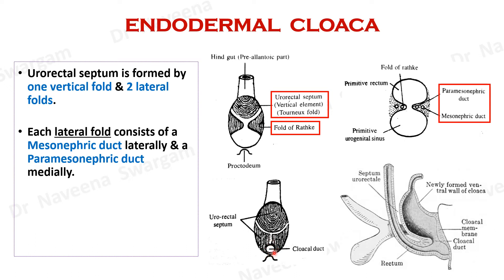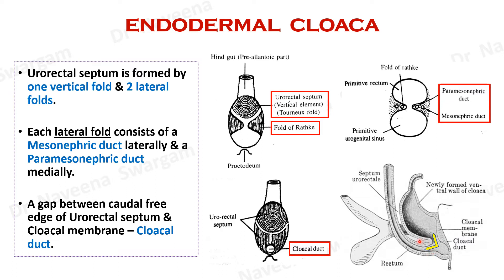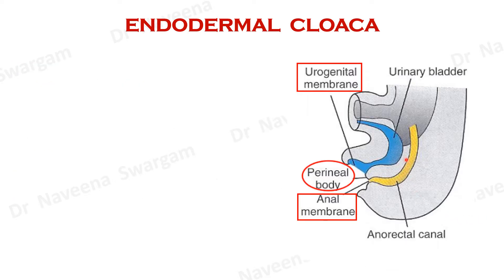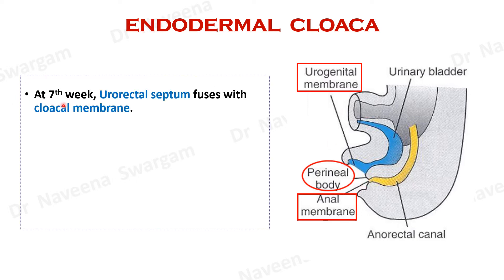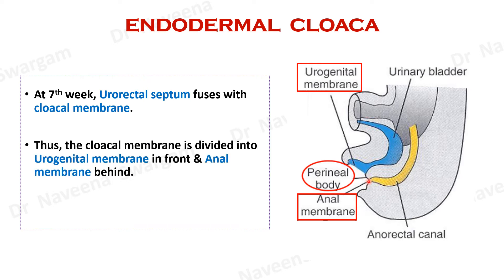Before it meets with the cloacal membrane, there lies a gap between the caudal free edge of the urorectal septum and the cloacal membrane known as the cloacal duct. Fusion of the urorectal septum with the cloacal membrane continues till the seventh week of development, during which the septum divides the endodermal cloaca into ventral urogenital sinus and dorsal anorectal canal. Simultaneously, it also divides the cloacal membrane into urogenital membrane in front and anal membrane behind. The point where the septum meets with the cloacal membrane remains as the perineal body.